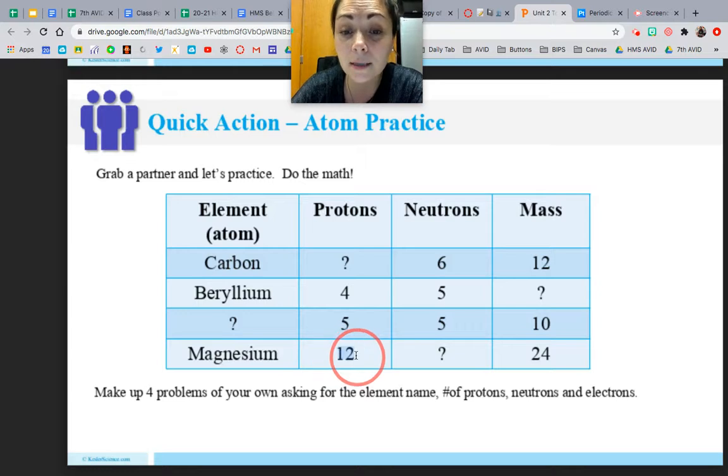Now magnesium has 12 protons and its mass number is 24. So to find neutrons, M-A-N, you take the mass number, 24, minus the atomic number, 12, and I would have 12 neutrons.